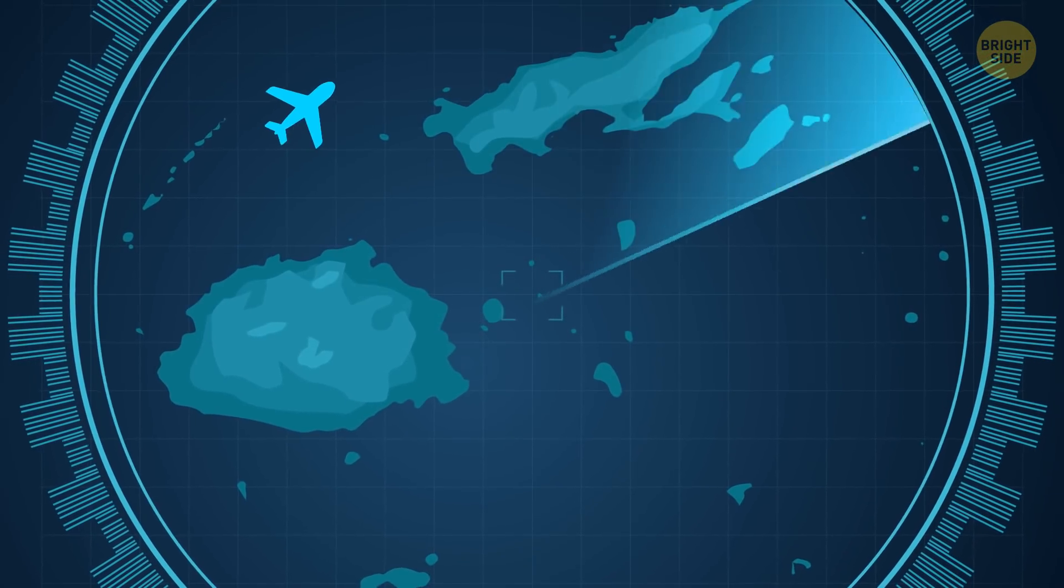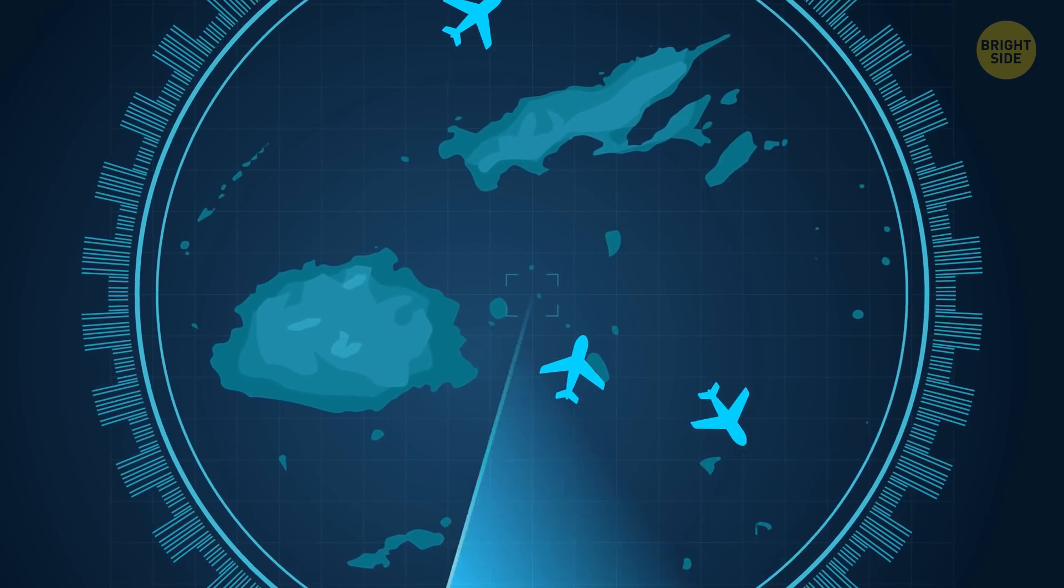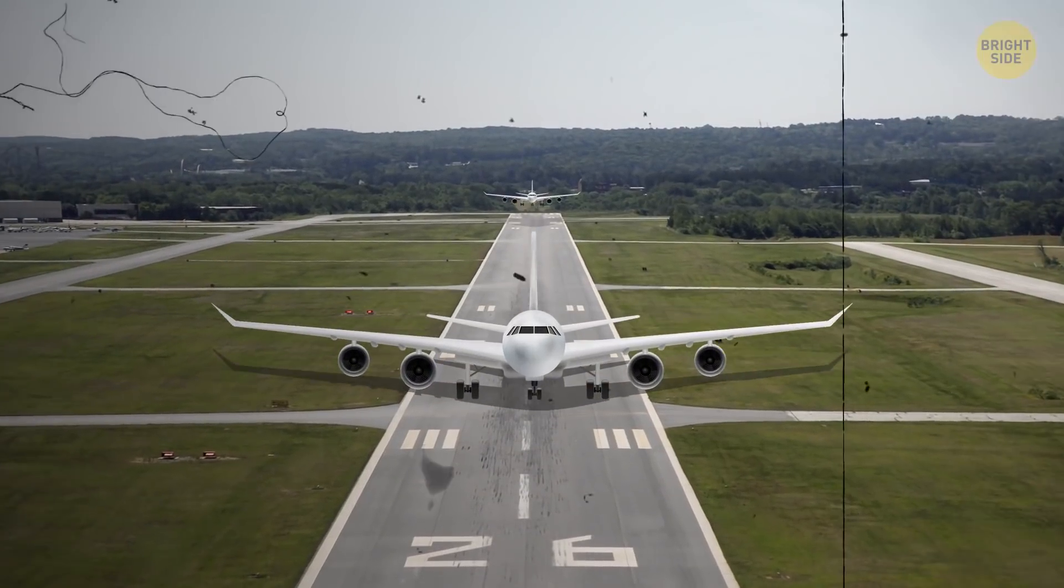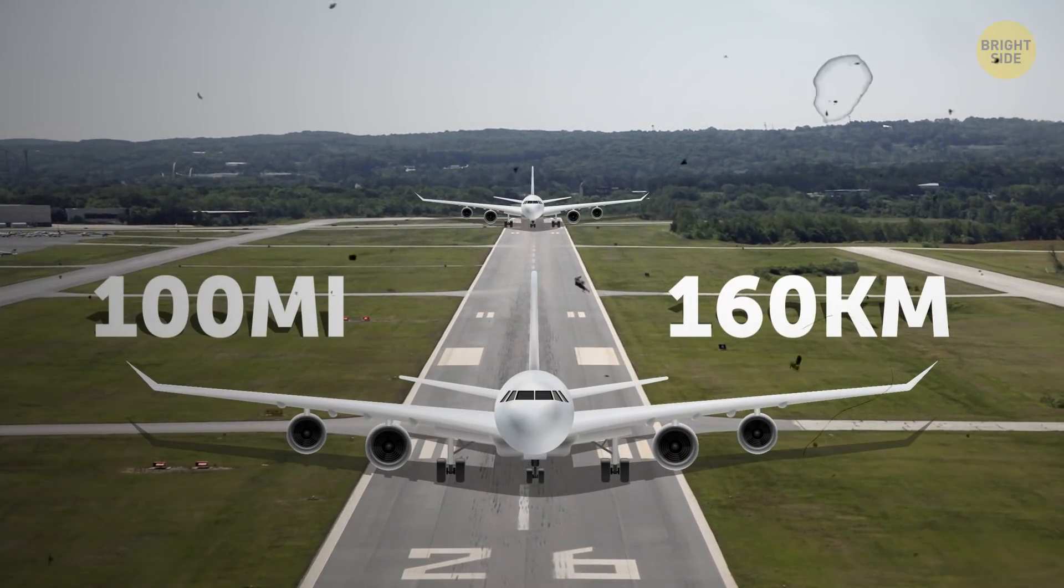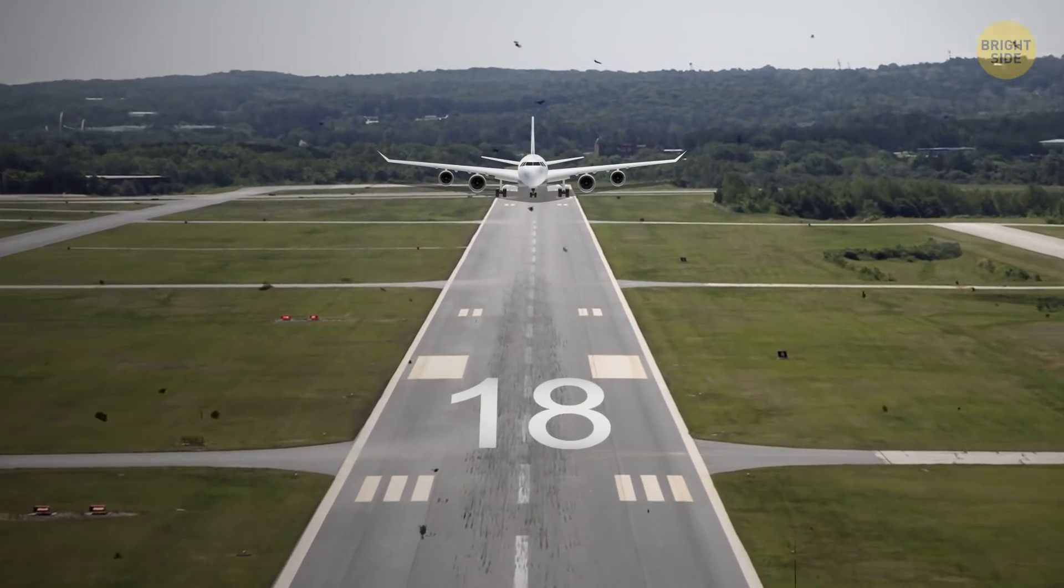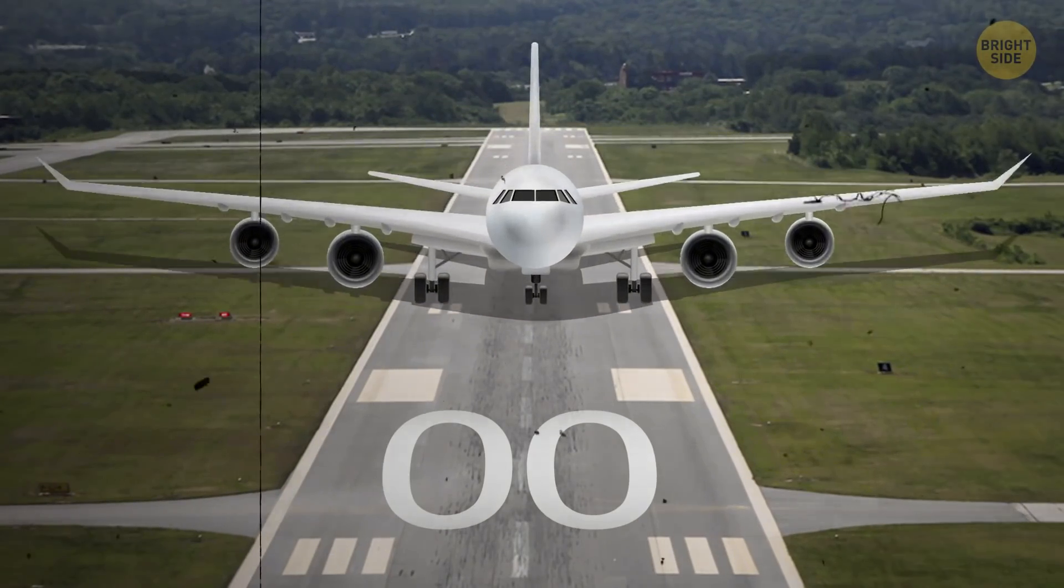Being able to tell precisely where every plane was at any given time was also a pretty big help to the island's air traffic controllers. Prior to GPS becoming widely available, two jets flying the same route couldn't be less than 100 miles apart. The second plane also had to wait a full 18 minutes before it would be cleared to take off.